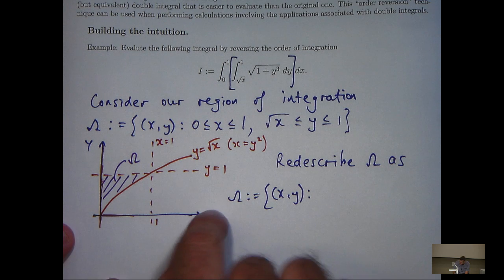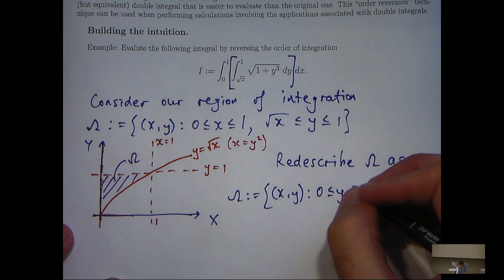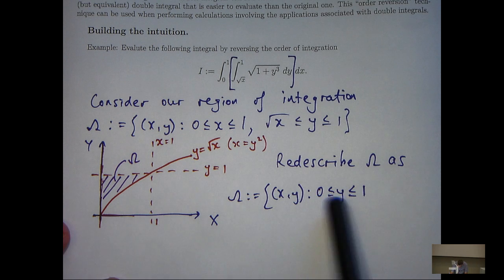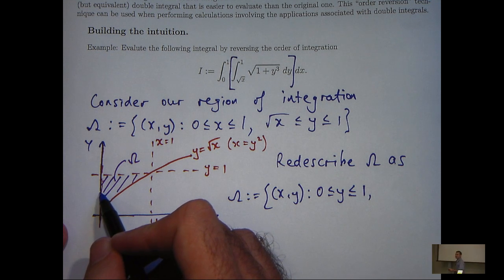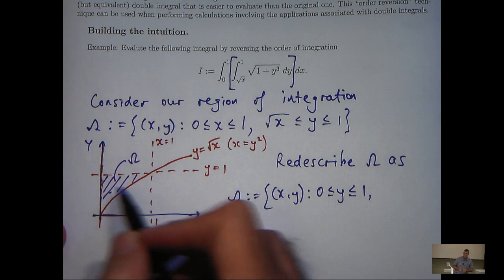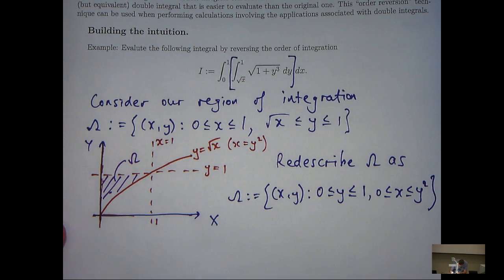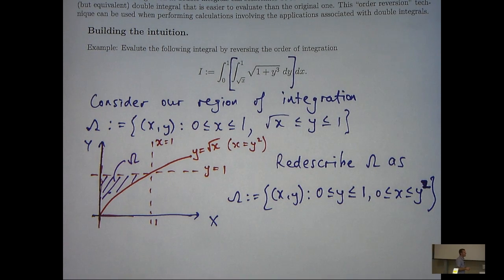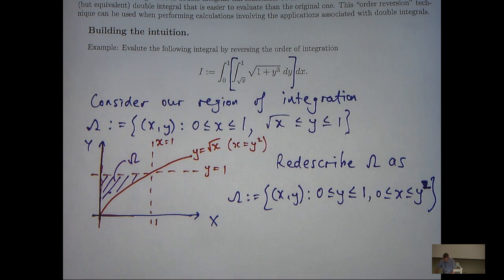Okay, so how can we do that? Well, that's the line y equals zero, and that's the line y equals one. So, we've now, instead of having two constants bounding the x points, we've got two constants bounding the y points. And what about x? Well, all the x points in omega lie to the right of the line x equals zero, and lie to the left of the line x equals y squared.